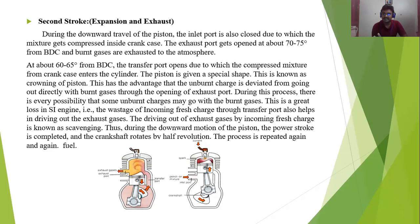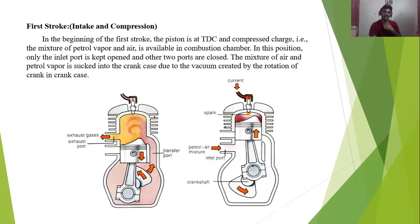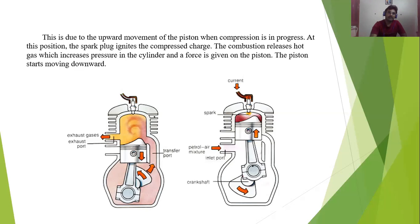At that time there is a possibility that some unburnt fuel escapes through the exhaust — that is the major disadvantage of the two-stroke SI engine: fuel efficiency is low but power production is high. In summary, at the beginning of the first stroke the piston is at the top dead center, and a compressed charge — a mixture of petrol vapor and air — is available in the combustion chamber. In this position only the inlet port is open and other ports are closed.